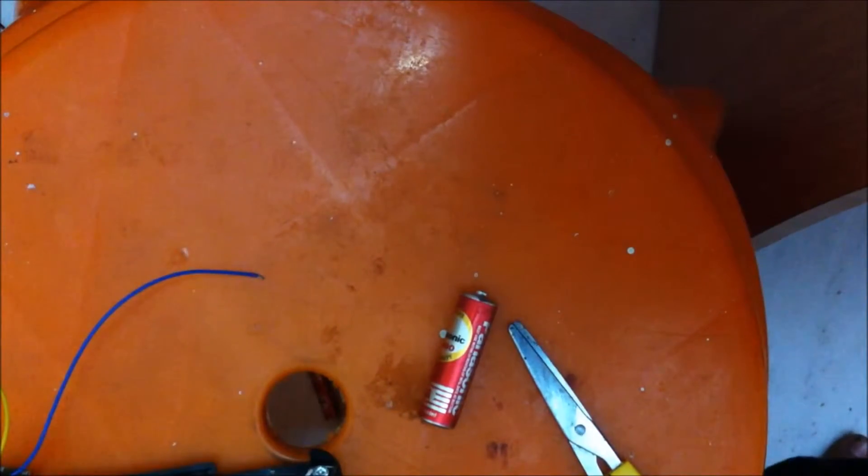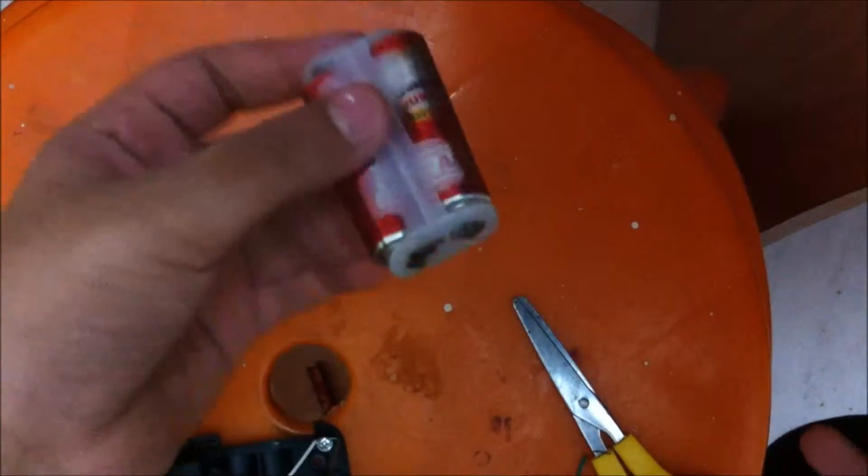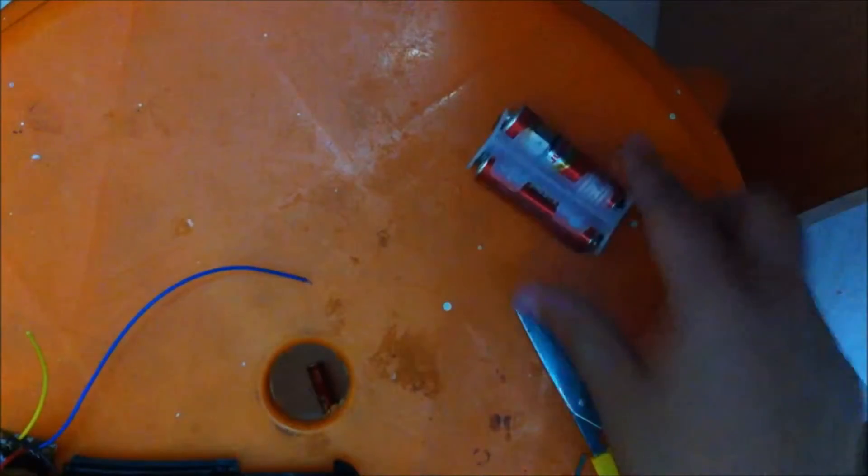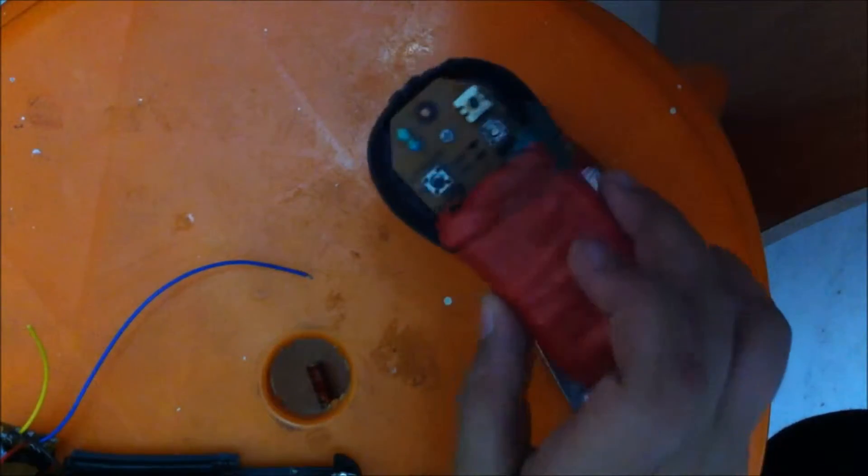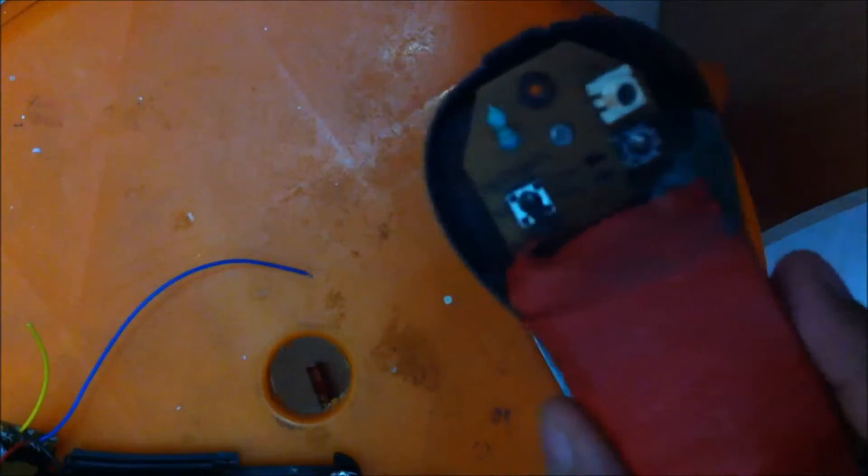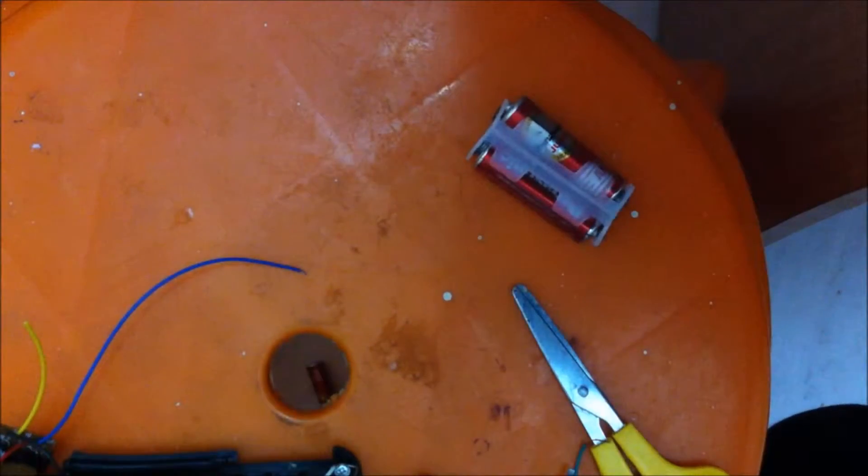So first we will begin with the project. We will add the batteries inside the battery holder like this. Then I have put in the batteries inside the remote and I have closed it and opened the printer of the thing so that you can all see. This is the button, all things is there.